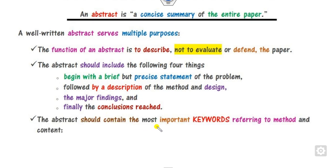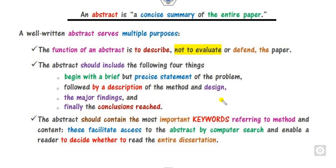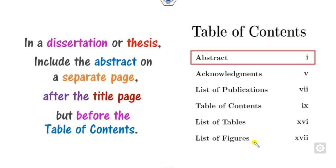After that, you should write the major keywords referring to your approach. The advantage of including keywords in the abstract is that they facilitate computer search and enable the reader to decide whether to read the entire dissertation, paper, or thesis. These are the major purposes of the abstract.